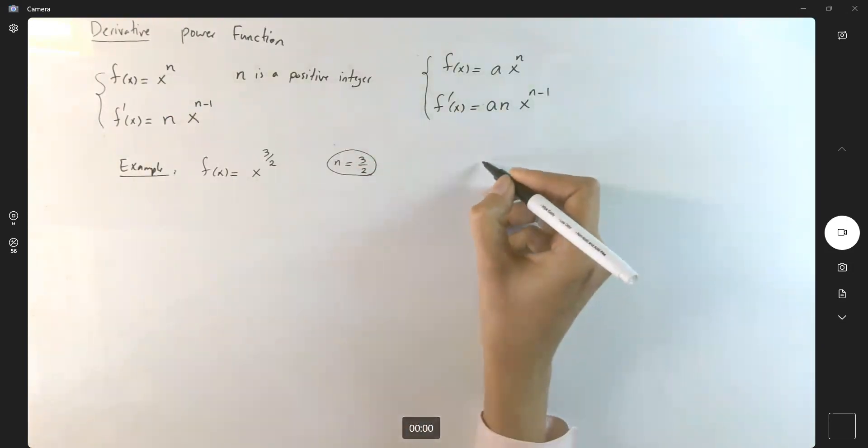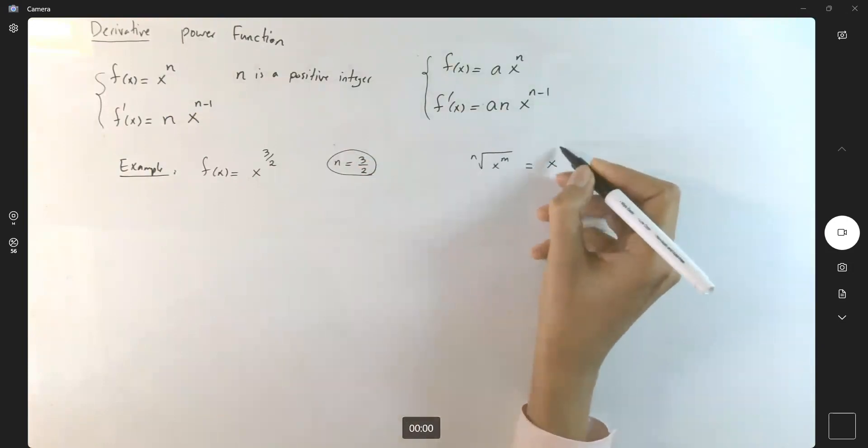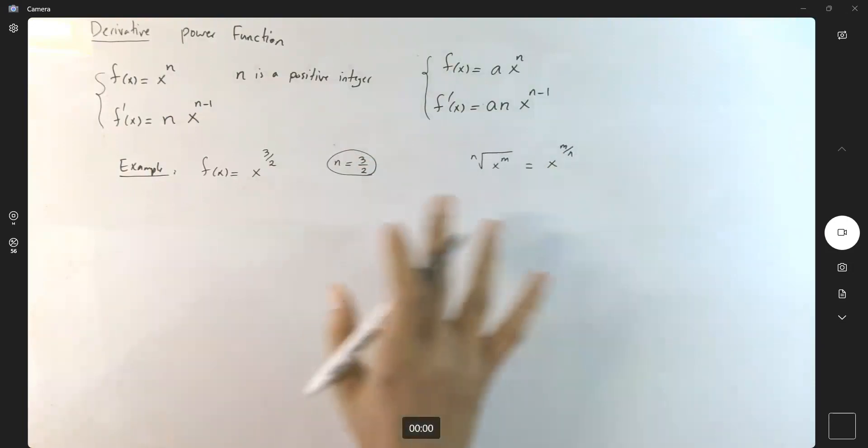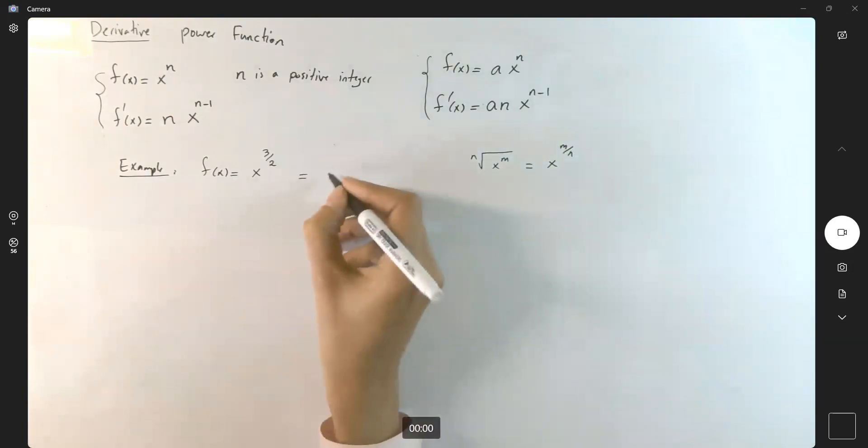In algebra, we learn that if you have the nth root of x to the n, this can be written as x to the power n over m. So these two are equivalent to each other. You can write this as the square root of x to the third.